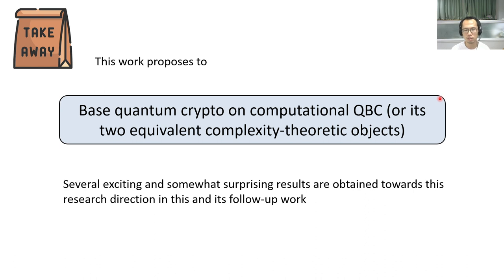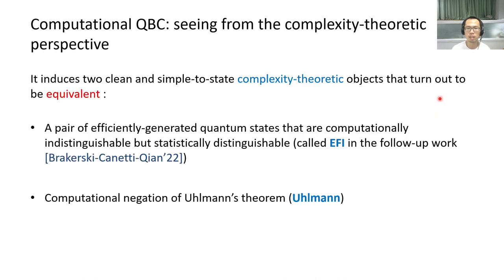Now let me go into some detail. Seen from the complexity-theoretic perspective, computational QBC induces two clean and simple complexity-theoretic objects that turn out to be equivalent. The first object is a pair of efficiently generated quantum states that are computationally indistinguishable but statistically distinguishable — called EFI in a follow-up work. The second object can be viewed as the computational negation of Wootters' theorem; we call it Wootters.